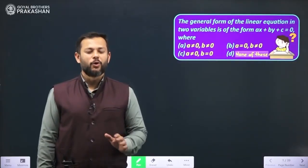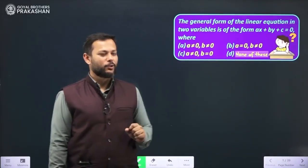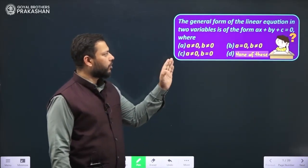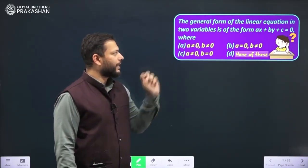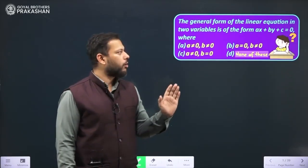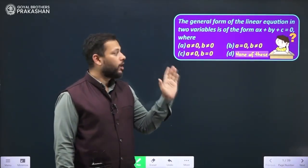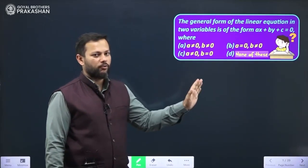Hello dear students, I hope you all are doing well. Let us look at this question. The general form of the linear equation in two variables is of the form ax plus by plus c equals to 0, where we are being given with four options.